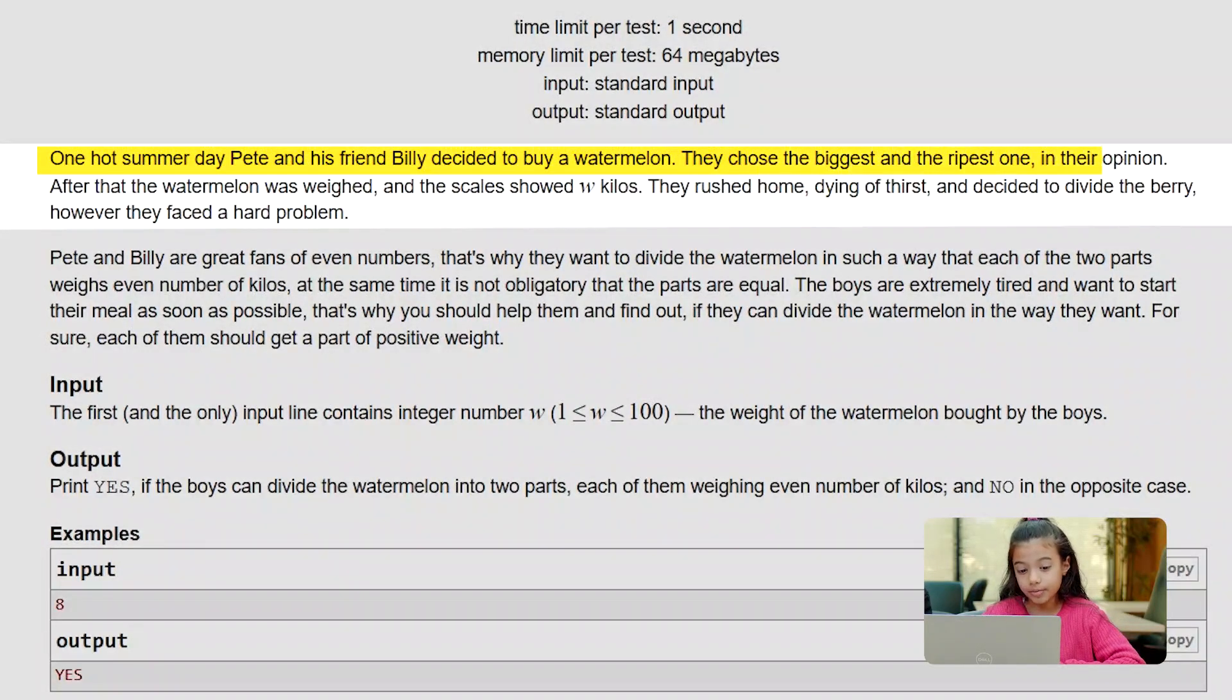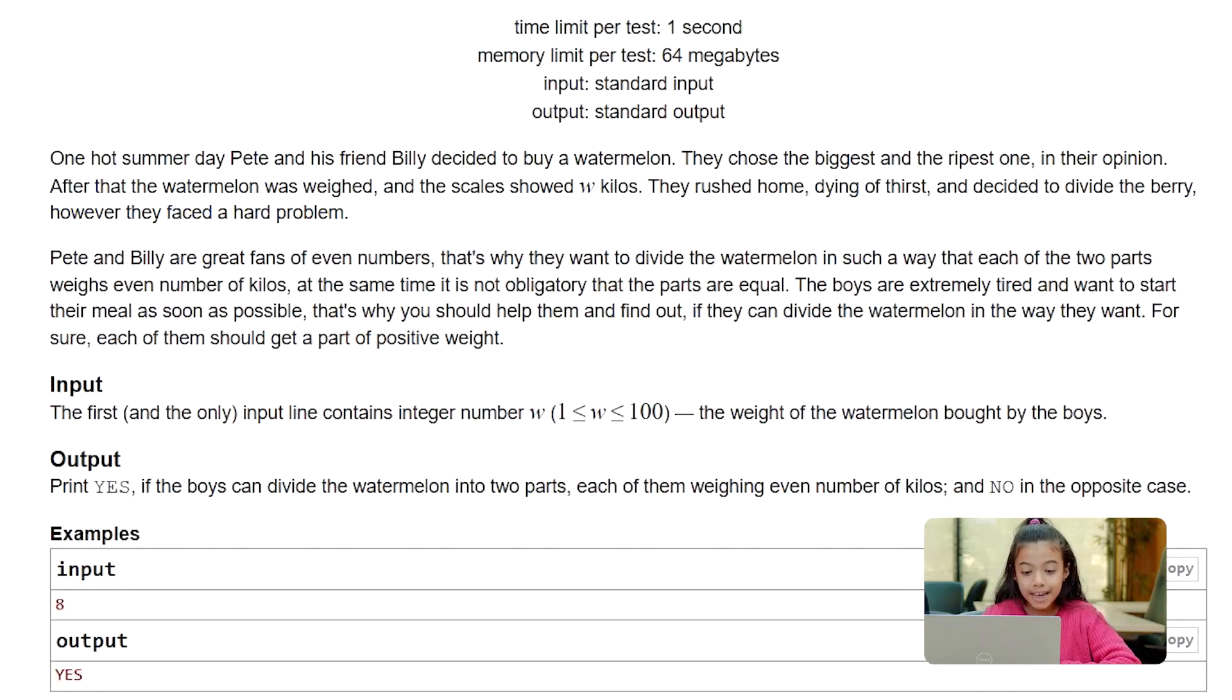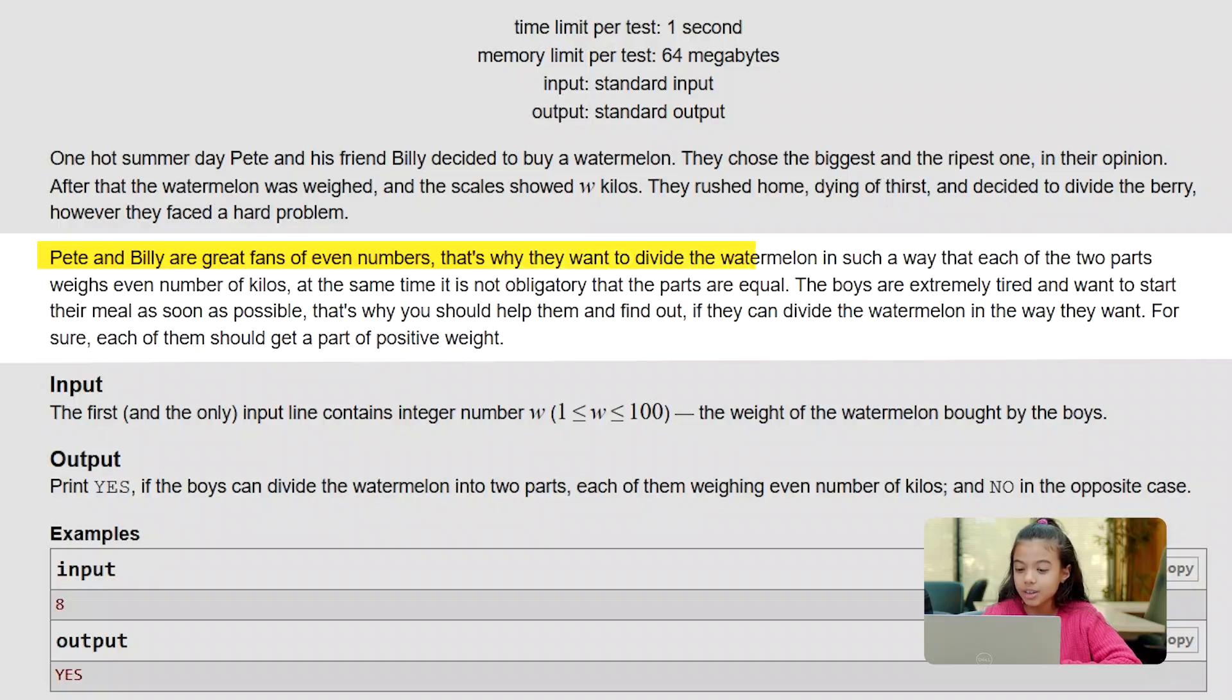After that, the watermelon was weighed and the scales showed W kilos. They rushed home dying of thirst and decided to divide the berry. However, they faced a hard problem. Pete and Billy are great fans of even numbers.